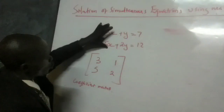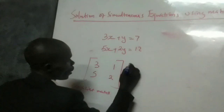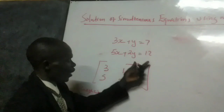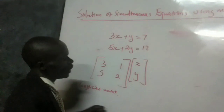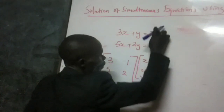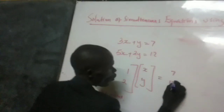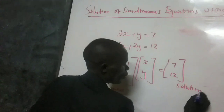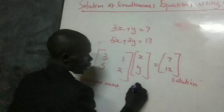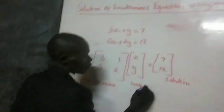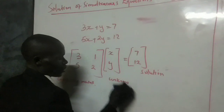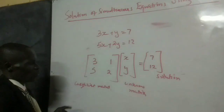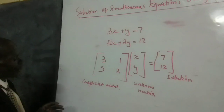Then, for the variables, we form a column matrix with the variables, so that we have x and y in column form. And then the 7 and 12 form what we call the solution matrix. This unknown matrix contains the unknown variables which we want to find the values of.